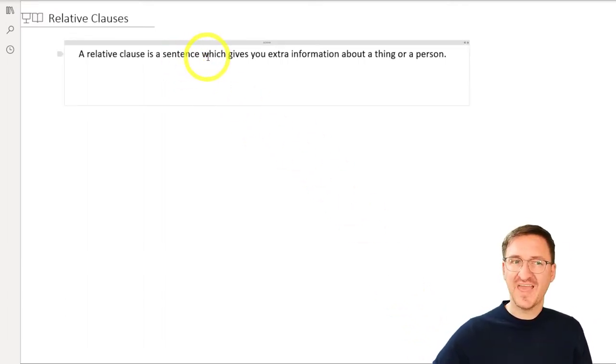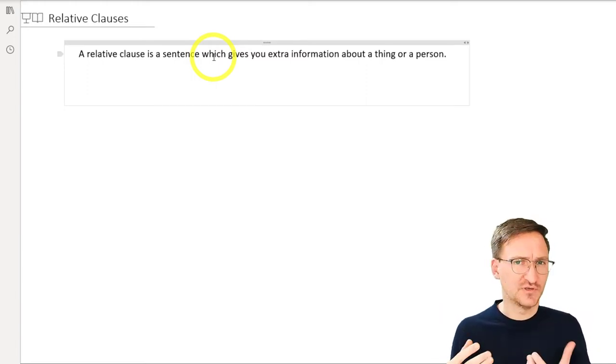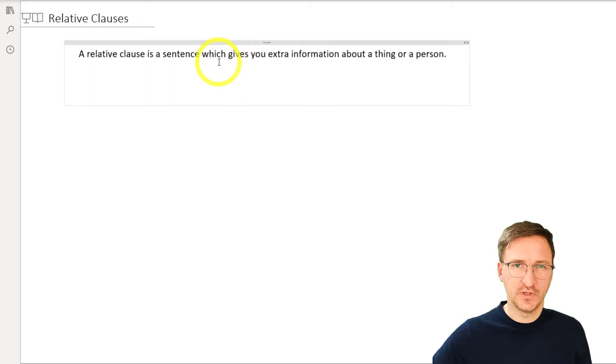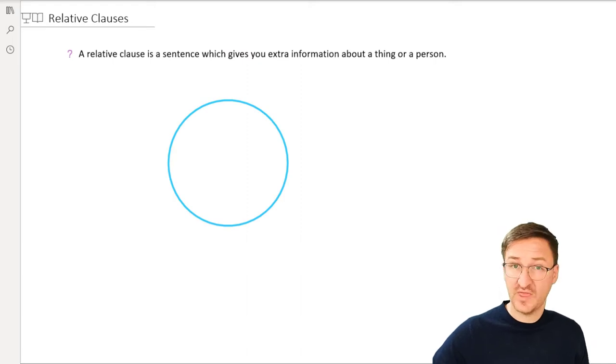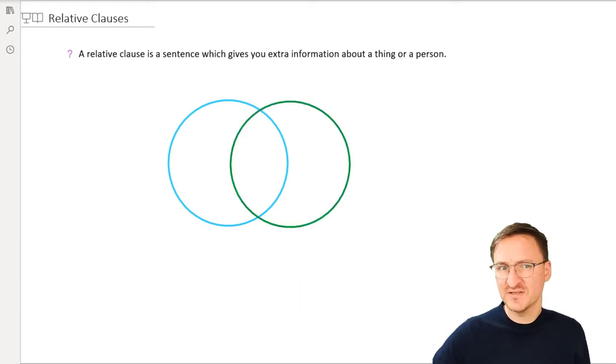And guess what? Which gives you extra information already tells us that we're talking about a relative clause, because we're using a relative clause. Let me draw that down for you in a bit more detail. Let's go with two circles here. We have got a blue circle and a green one. We're going to need the colors later on, so pay attention here.